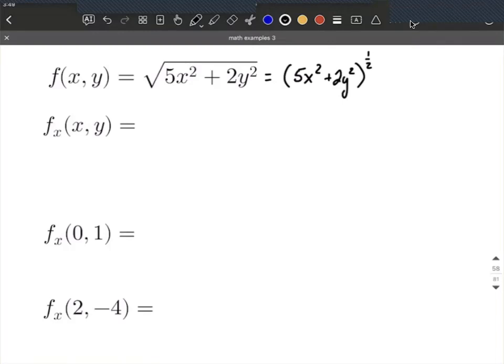First we take the derivative of the outer function, so the 1/2 comes down. We reduce that exponent by 1, so 1/2 - 1 gives us -1/2 for our new exponent. We keep everything on the inside the same: 5x² + 2y².